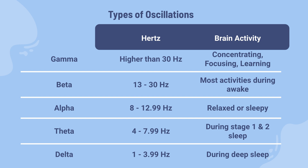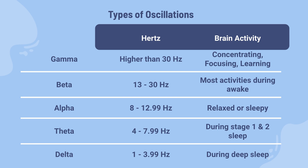So what are the functions of neurooscillations? Researchers have found that these oscillations play a crucial role in a wide range of cognitive processes, including attention, perception, memory, and decision-making. They also help synchronize activity across different brain regions, allowing for more effective communication and coordination between different parts of the brain.